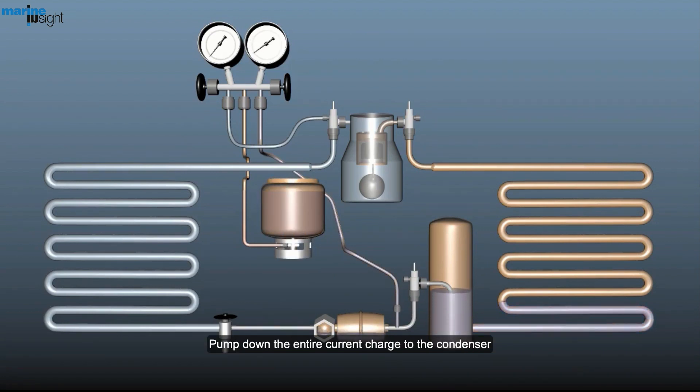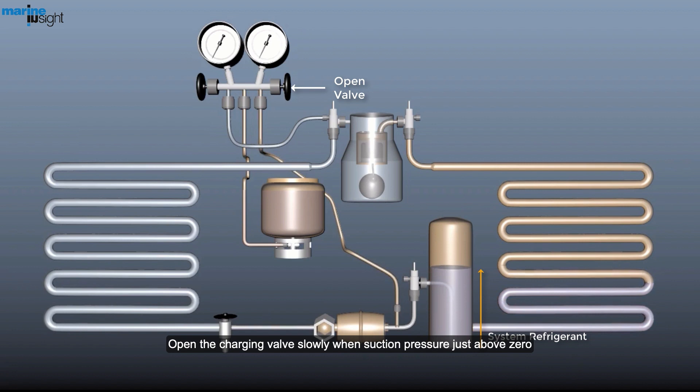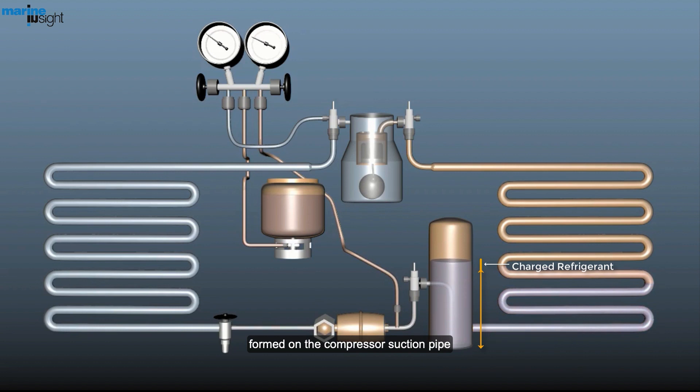Pump down the entire current charge to the condenser. Open the charging valve slowly when suction pressure is just above zero. Valve opening should be done slowly so that no frost forms on the compressor suction pipe.